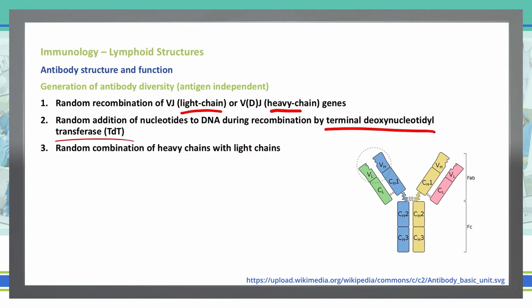Finally, we can also just have random combination of the heavy chains and the light chains. We can have recombination where the light chain will cross over and become the heavy chain. So the yellow will cross over and become the pink, and the pink crosses back over and becomes the yellow. There's just your random combination of heavy and light chains.